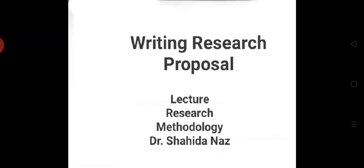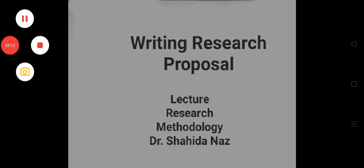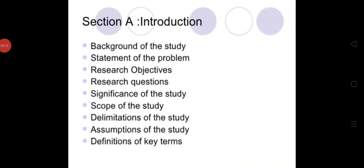Let's continue the lecture and learn the points which were left in the previous lecture. In the introduction section of your research proposal, you are going to include the background of the study, statement of the problem, research objectives, research questions, significance of the study, scope of the study, delimitations, and assumptions of the study, and definition of key terms. The scope of the study was already covered in the previous lecture, and now we are going to study about the delimitations of the study.